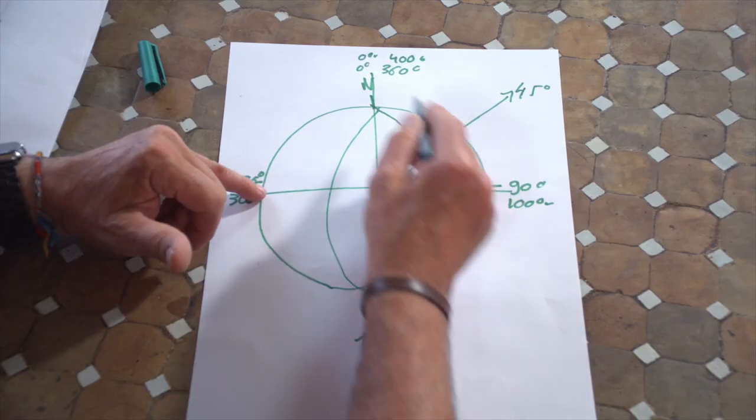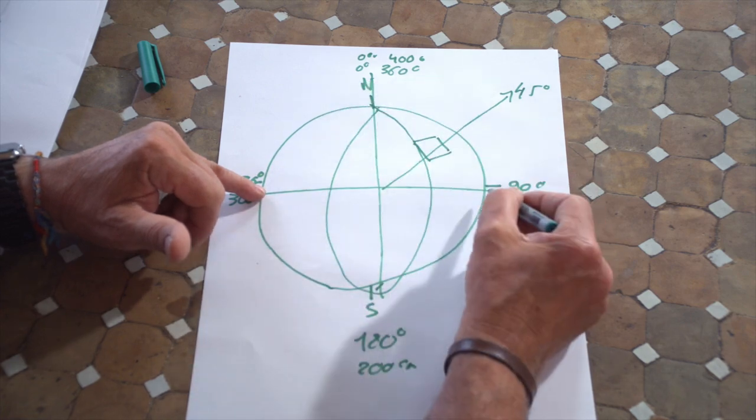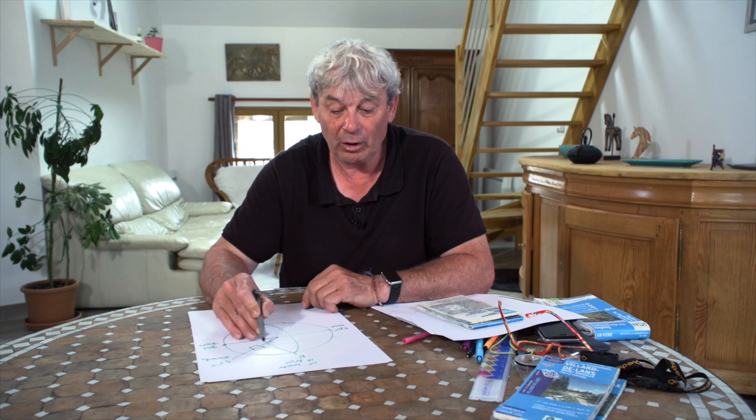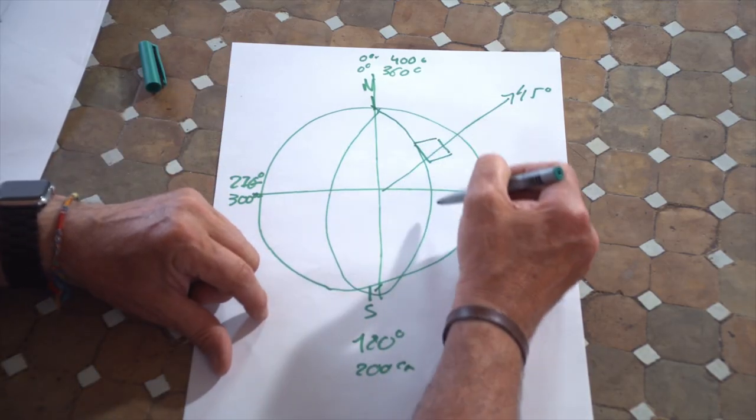Ces 45 degrés sont indiqués sur les cartes, mais aussi en kilomètres, car nous avons des coordonnées géographiques et des coordonnées kilométriques. On part du principe que le globe fait 40 000 kilomètres. Si tout le tour fait 40 000 kilomètres, entre l'Équateur et le pôle, on a 10 000 kilomètres. Donc nous, qui nous situons à 45 degrés, nous sommes environ à 5 000 kilomètres de l'Équateur. En longitude, nous sommes entre 2 et 6 degrés du méridien de Greenwich, soit de 200 à 1 200 kilomètres de longitude Est.